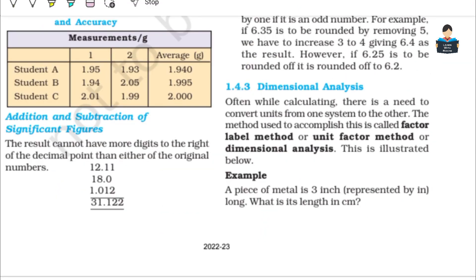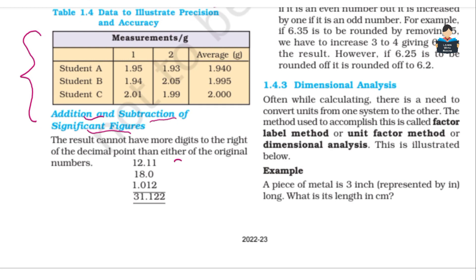Next is addition and subtraction of significant figures. Here are three numbers: 12.11, 18.0, and 1.012. The result cannot have more digits to the right of the decimal point than either of the original numbers.